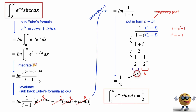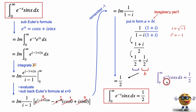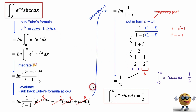What's kind of cool is that the real portion, one half, is also the answer to the integral of e to the negative x cosine x, because cosine x is the real part of Euler's formula. Let me know if you like this method better. Cheers.